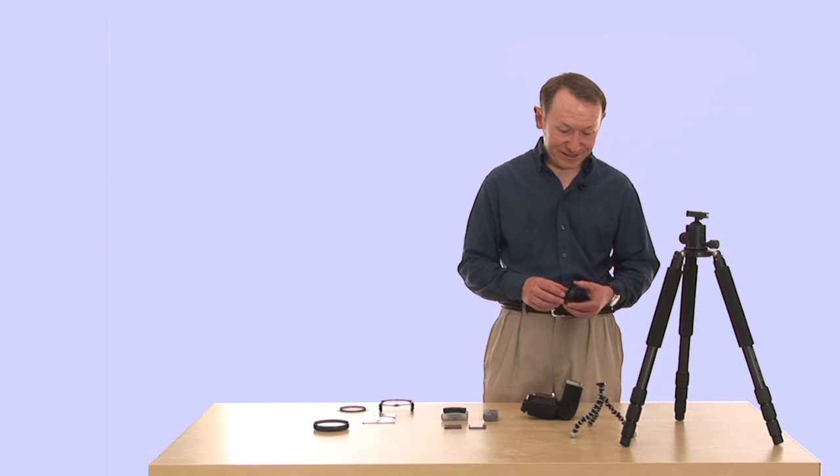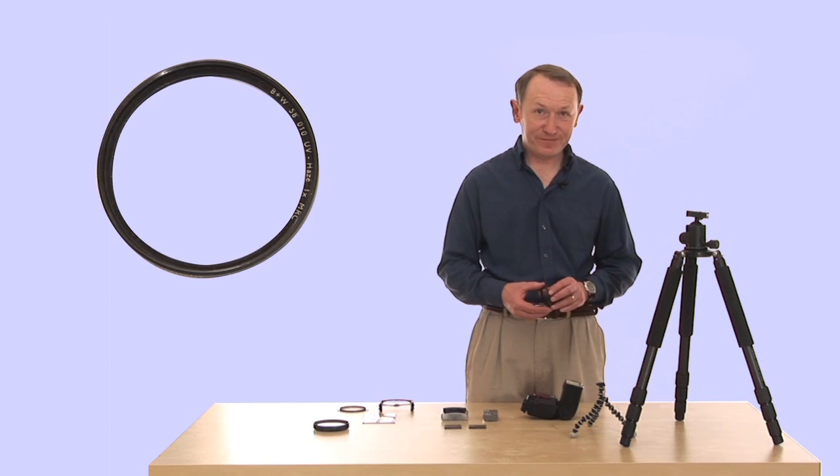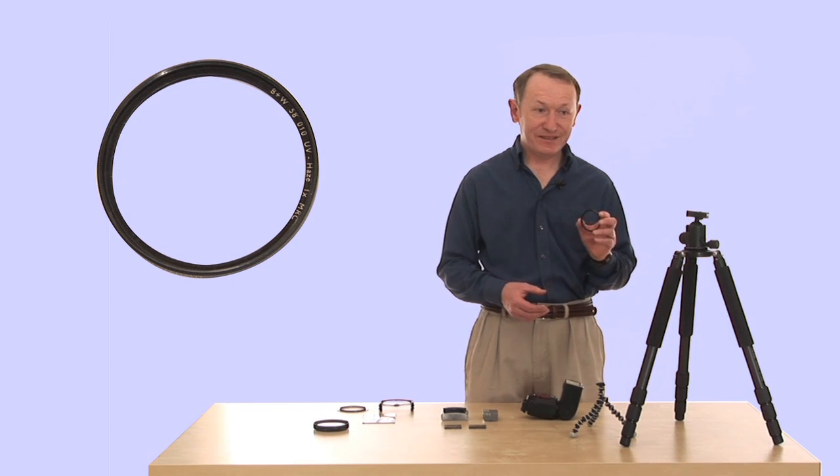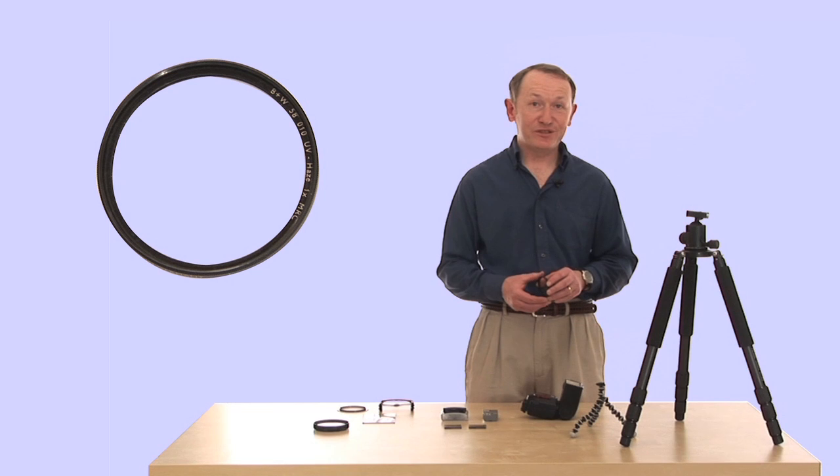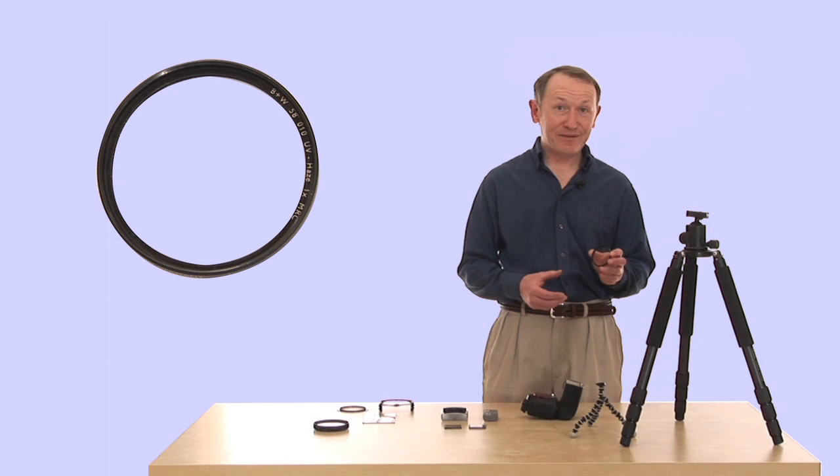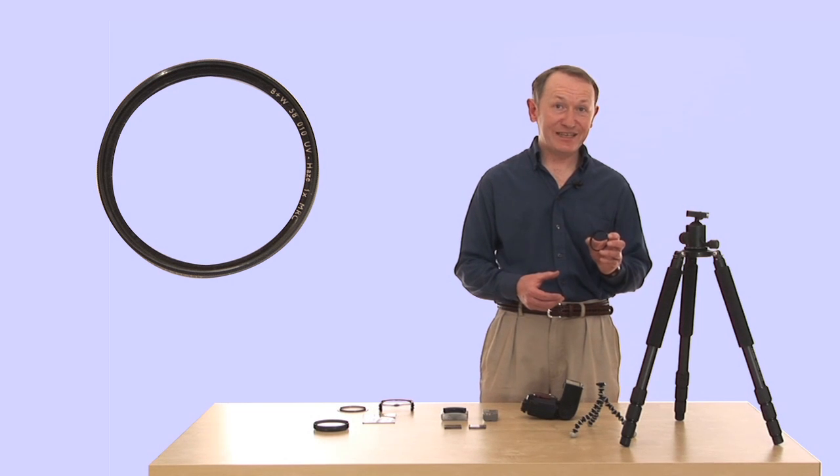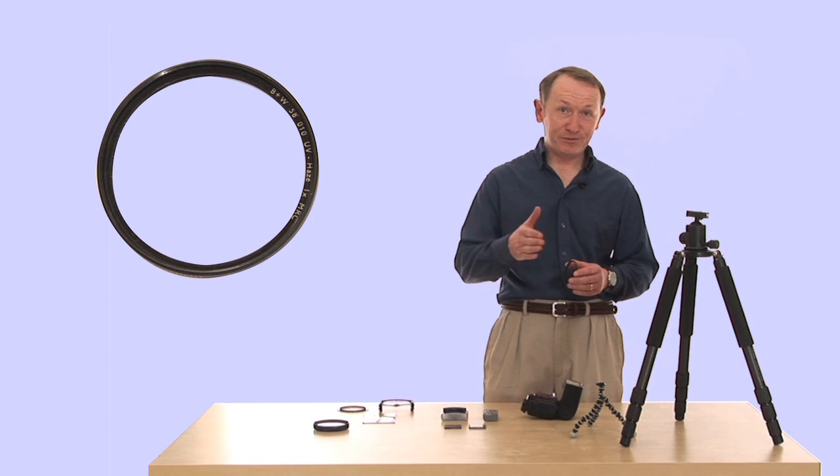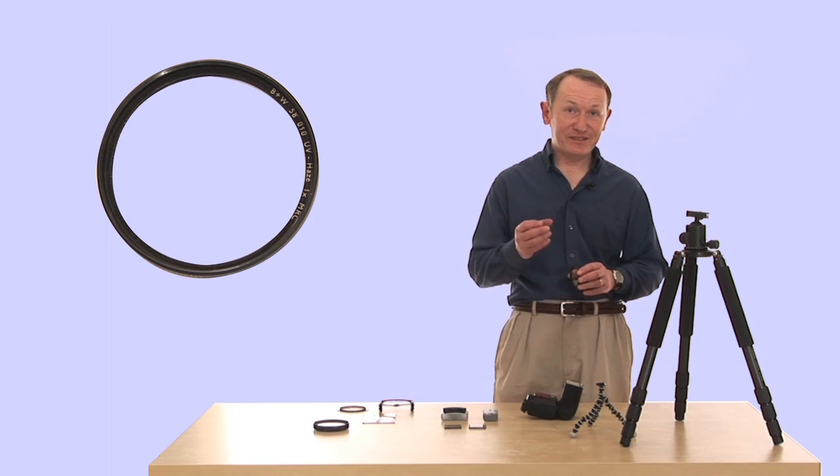The next thing we'll look at is a UV filter. A UV filter goes on the front of the lens. Now these filters don't usually fit on most compact cameras. So if you've got a compact camera, don't worry about a UV filter because your lens is going to be protected when you switch the camera off, as most lenses will fold behind a protective cover.